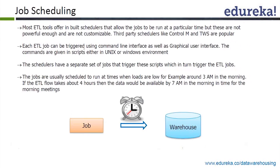There are also various third-party schedulers available. You can also schedule jobs in your Windows server, or you can have a cron job in a Unix server to schedule your ETL jobs if it's compatible with Unix scripting and shell scripting. Third-party tools — examples shown here are Control-M and TWS — these are a few tools available in the market.